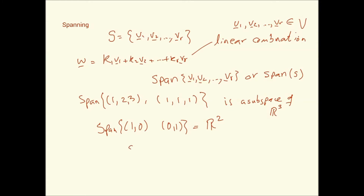The span of 1, x, x², x³, ..., xⁿ — these polynomials — is, of course, Pn. These vectors span Pn. For instance, if you take 1 and x, that would span all of P1, meaning you can produce any vector in P1 by taking linear combinations of 1 and x.